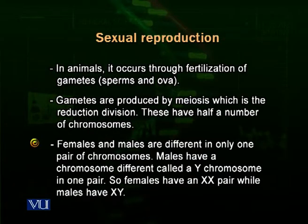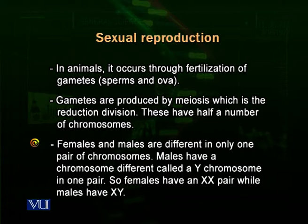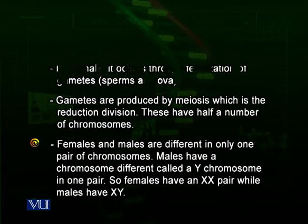Females and males differ in only one pair of chromosomes. For example, human beings have 46 chromosomes in 23 pairs. The first 22 pairs are called autosomes and are alike in both males and females. The 23rd pair differs: females have two X chromosomes, while males have one X and one smaller Y chromosome, which carries genes causing the organism to become male.